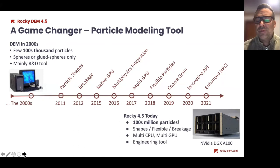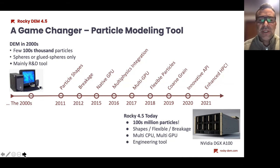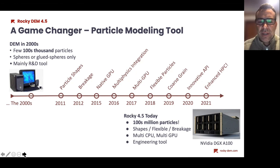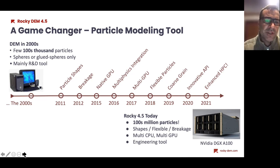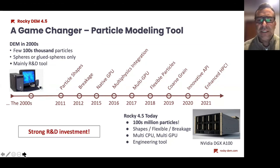What we have today: it's common to see customers working in hundreds of millions of particles instead of a hundred thousand. It's nice to see the migration over the last decade from a few academic papers to really interesting engineering applications. Migrating all this academic theory into the code only happens with a strong R&D investment — that's why Rocky has been the leading code for new features, new ways of doing things, and new models in commercial software.